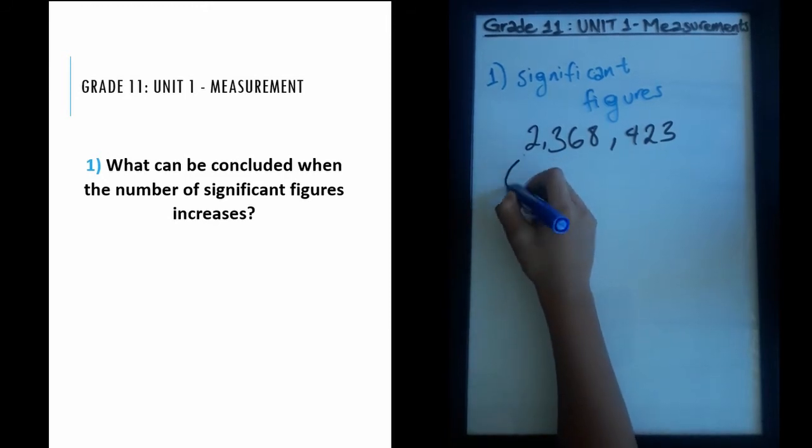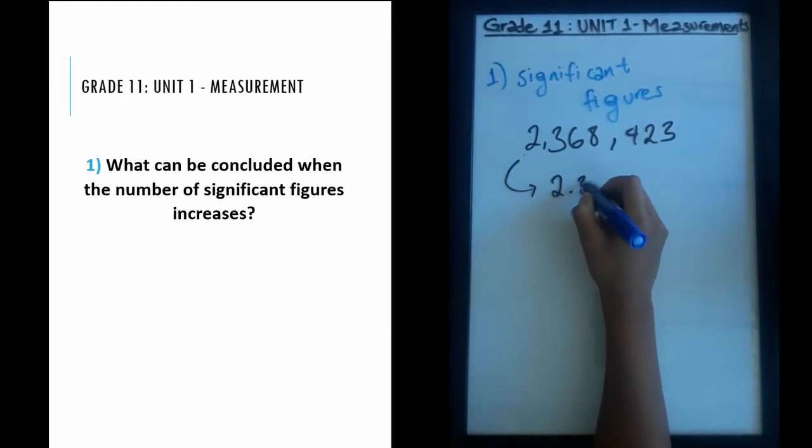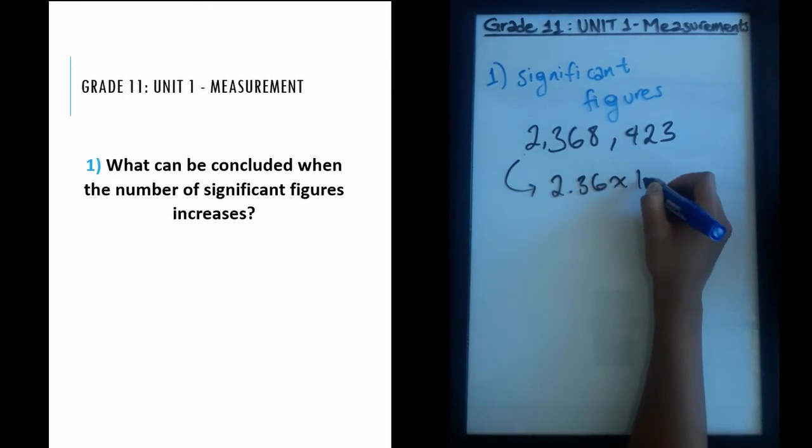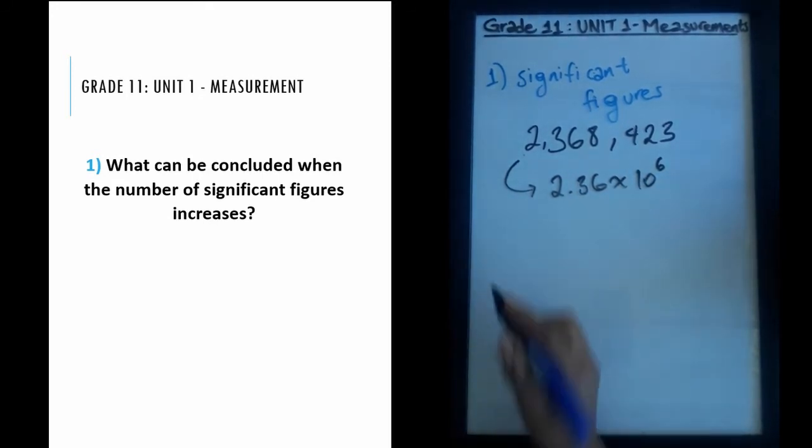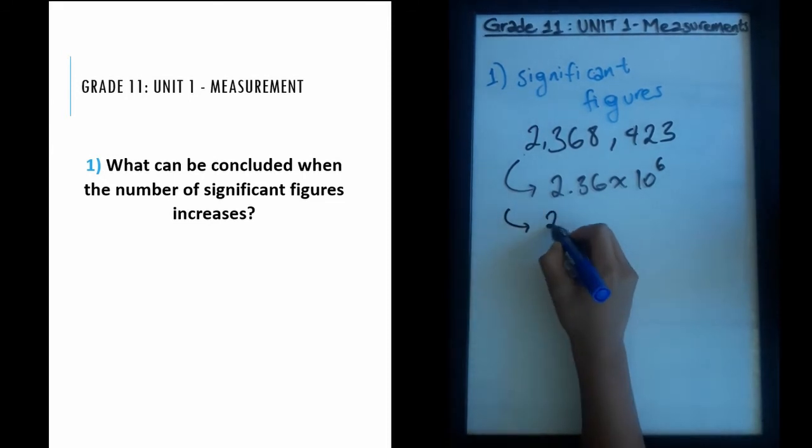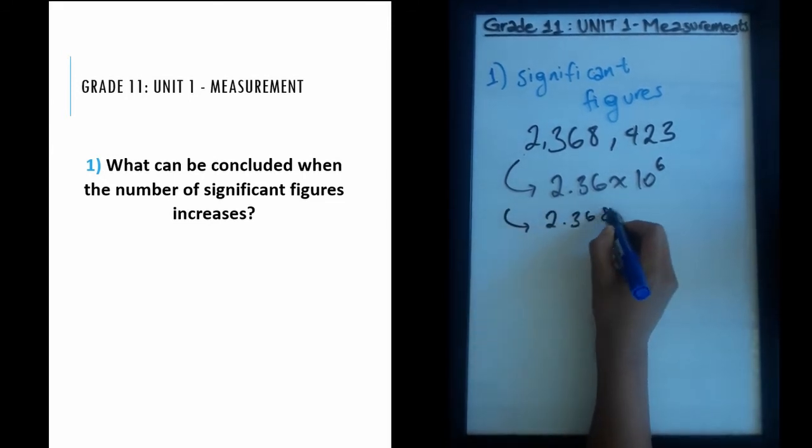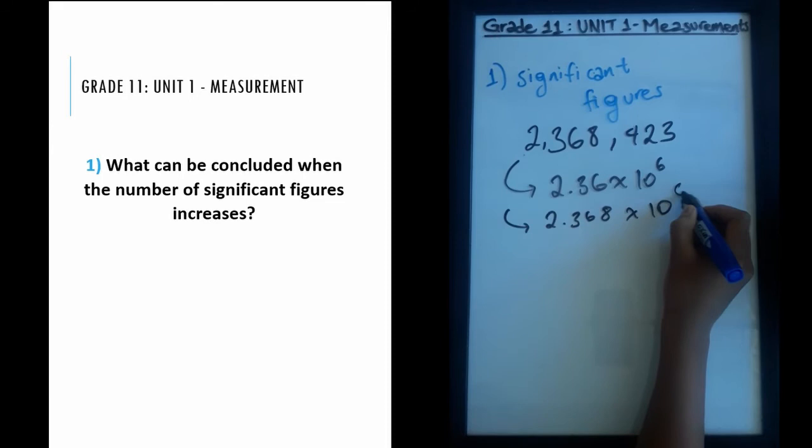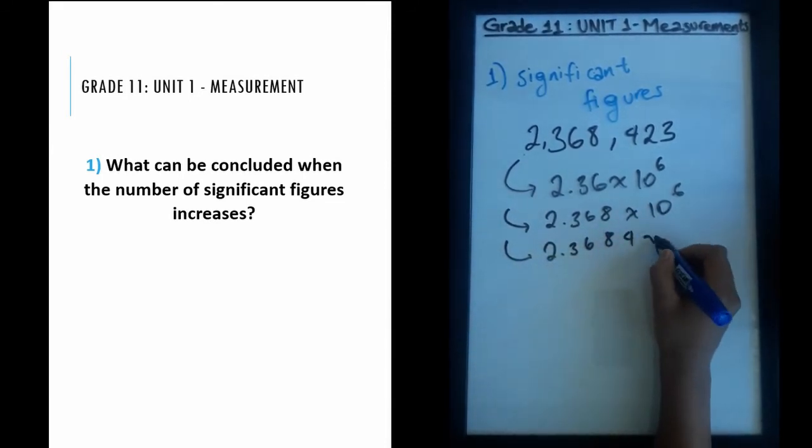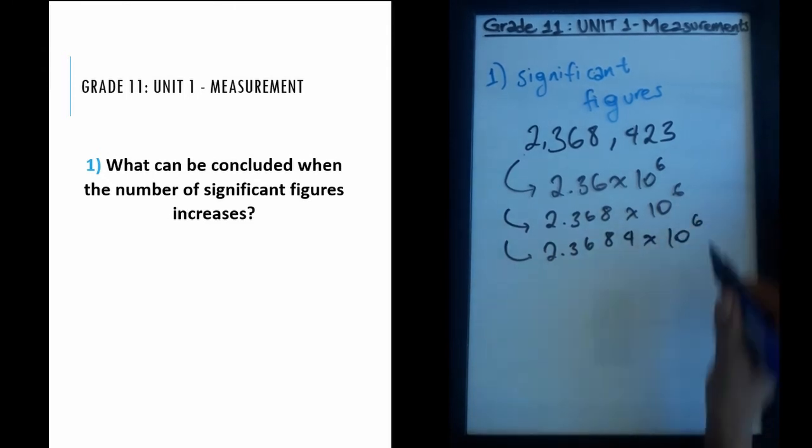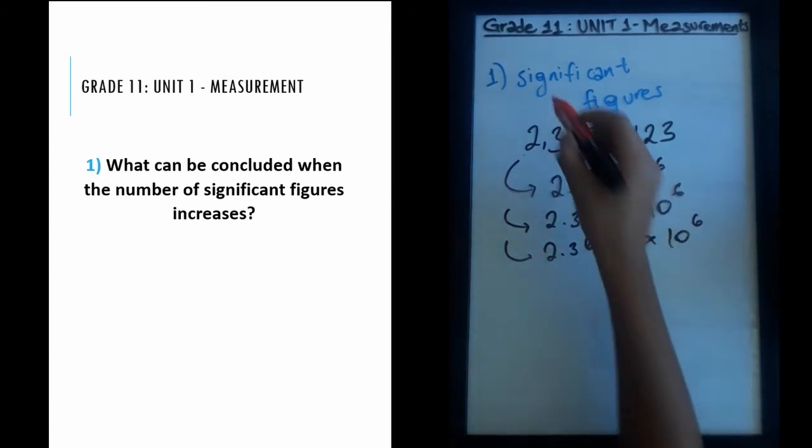That's a huge number. Usually in science, you don't write numbers like this. There's a much more appropriate way. For example, I could write this number as 2.36 times 10 to the power of 6. This is what you call the scientific notation. But I could also write this number as 2.368 times 10 to the power of 6, and I could also write this number as 2.3684 times 10 to the power of 6.